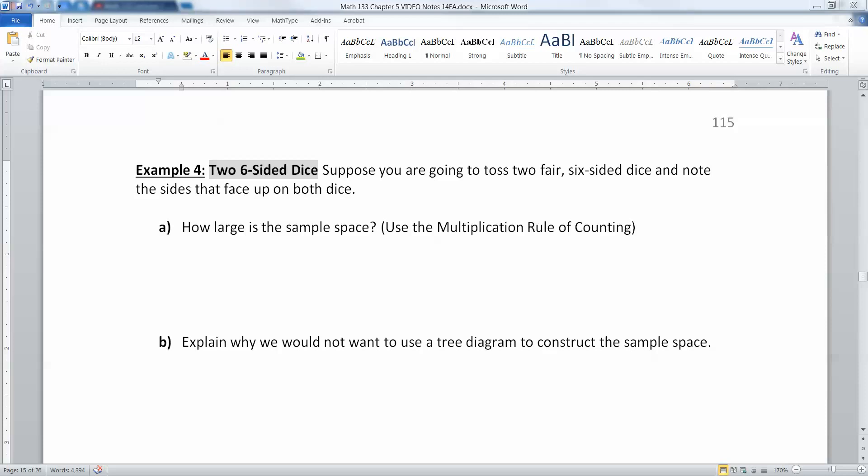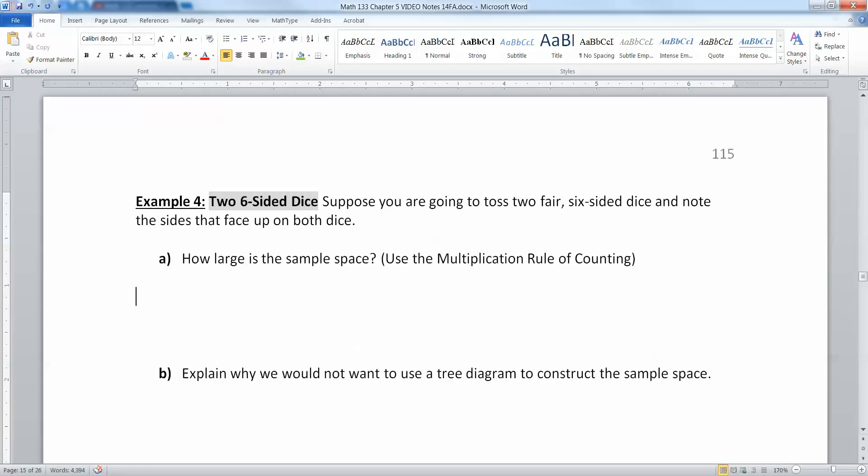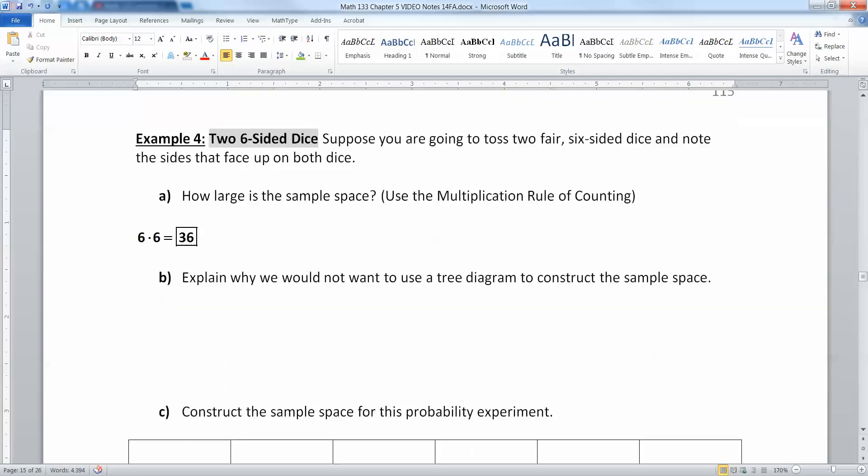So, for example, we are now going to toss two fair six-sided dice and note the sides that face up on both dice. So start off with what's your sample size? Well, your first die has six options, and your second die has six options, which means altogether you have six times six, which is 36 options.